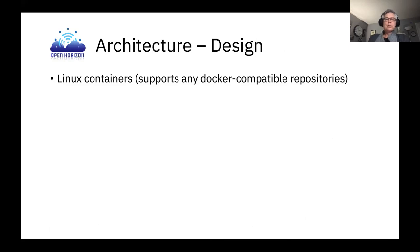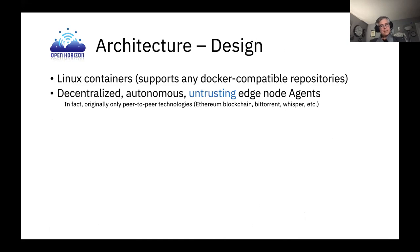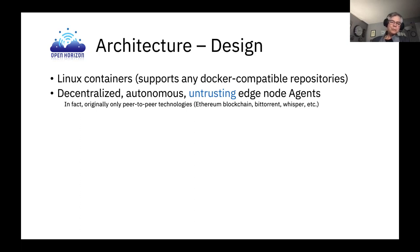Let's talk about the architecture. It's based on Linux containers, and it supports any Docker-compatible registries. It's decentralized, and the agents are fully autonomous and untrusting — we use a zero trust model. The original version we built used only peer-to-peer technologies: the Ethereum blockchain for rendezvous and agreement negotiation, BitTorrent for transferring files, and Whisper for communication between components. We had no central components at all — it was completely decentralized, with agents on each node talking to each other to arrange software deployment.